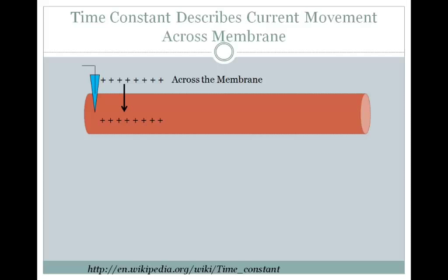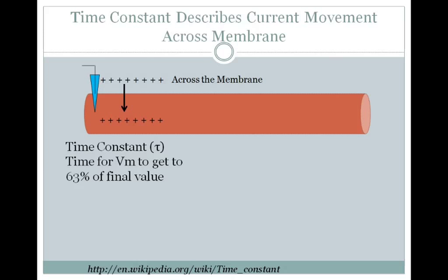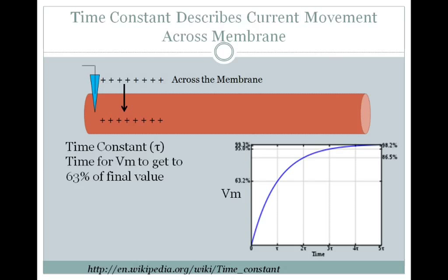The time constant can be used to describe current movement across the membrane. The time constant, or tau, is the amount of time it takes for the membrane voltage to get to 63% of the final value.